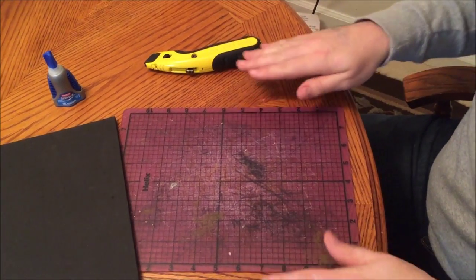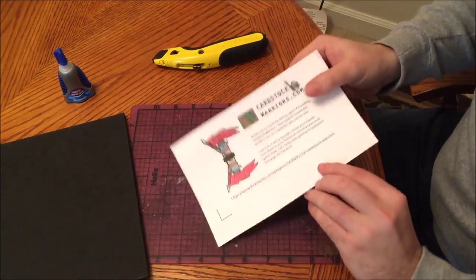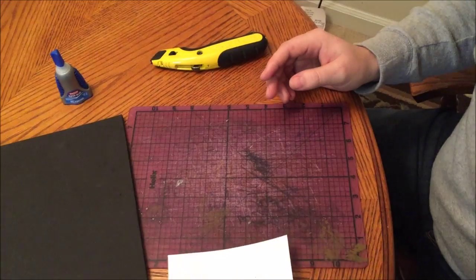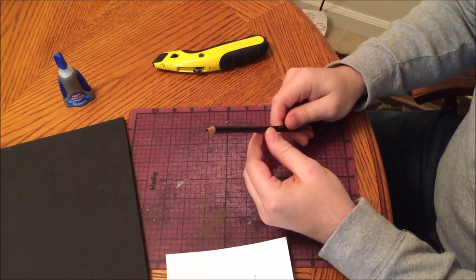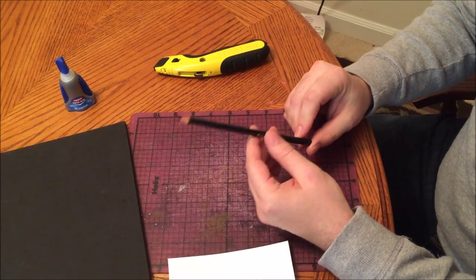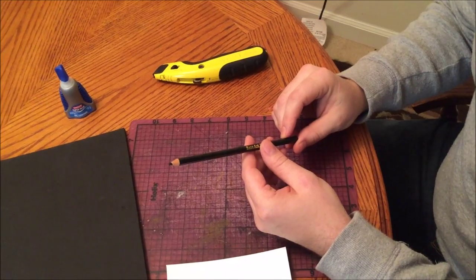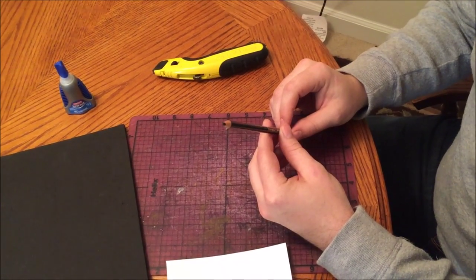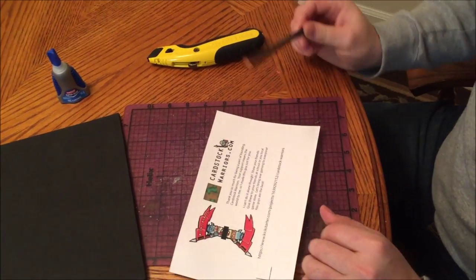A cutting mat because you don't want to ruin your nice table, and then your Cardstock Warriors model. Now optionally, if you intend to hand cut these, you may also want something to color any edges. I've just got a standard black colored pencil, but you can use markers as well. So now what we're going to do is get started cutting out this model.